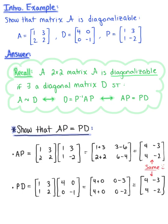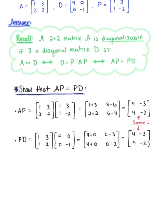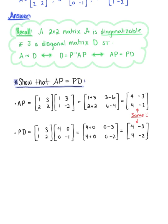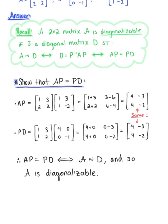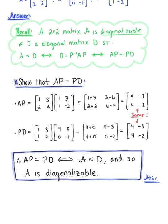We have the same resulting 2 by 2 matrix! We have verified that matrix A times matrix P equals matrix P times matrix D, which lets us know that matrix A is similar to matrix D, and therefore matrix A is diagonalizable. So this is our final answer.